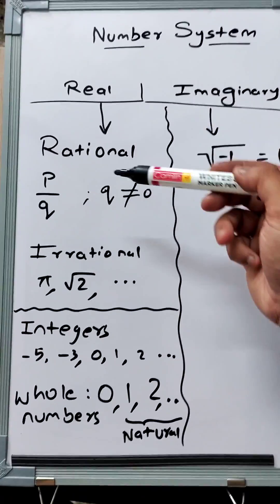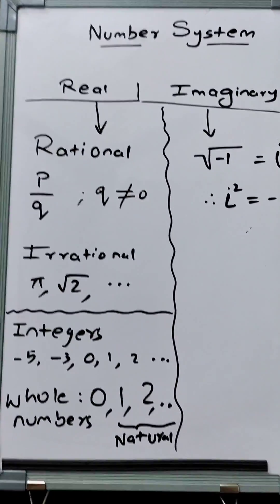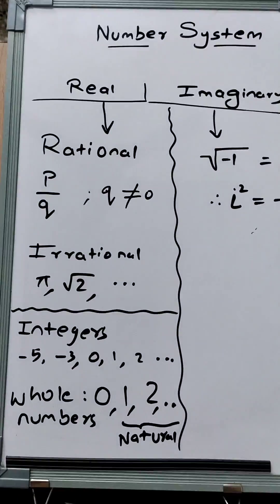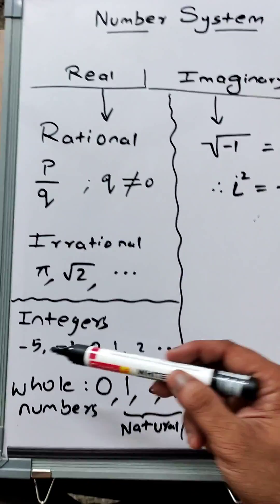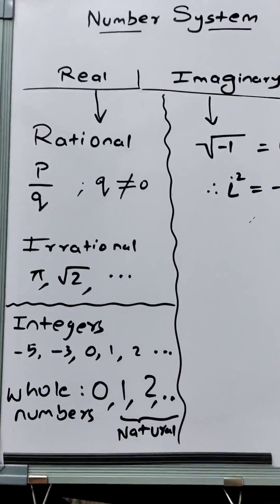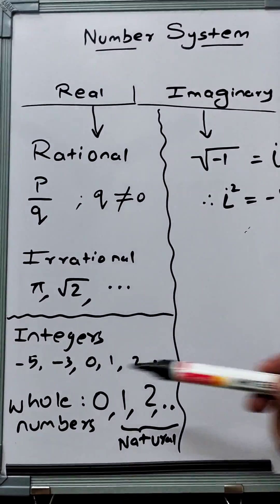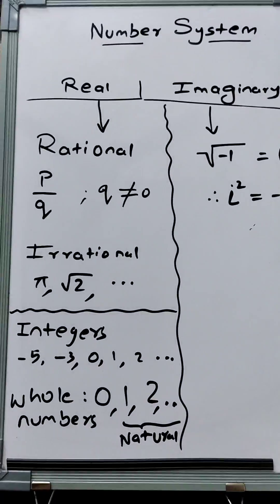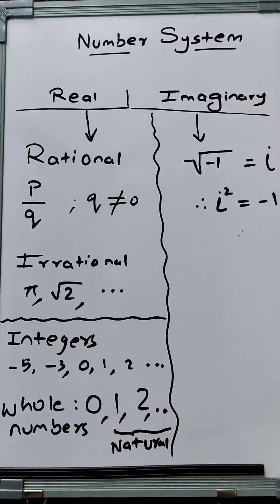Real numbers are classified into several parts: integers, whole numbers, natural numbers. Integers are numbers which have nothing after the decimal point. Whole numbers start from zero: 0, 1, 2... basically non-negative integers.